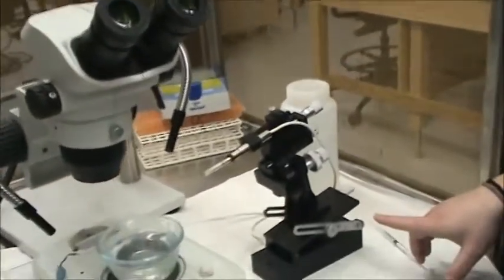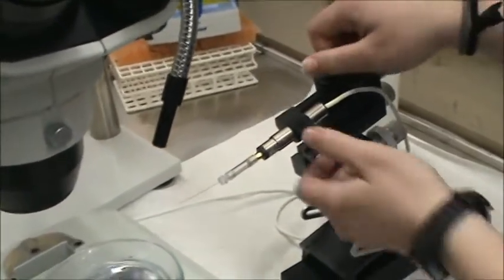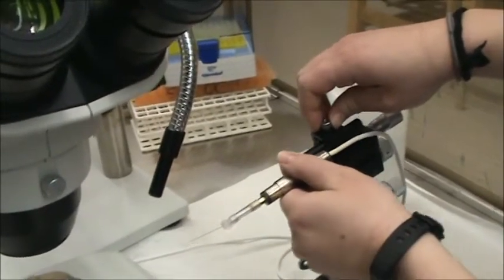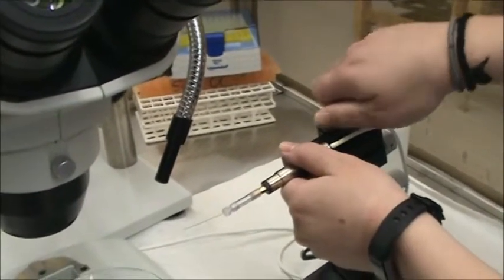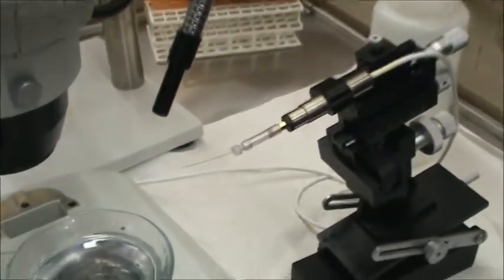OK, so your headstage should already be on your manipulator. So we're going to talk about how to adjust this a little bit. You can turn this knob and then this piece will slide in and out. You're going to want that tight. It also will slide up and down.